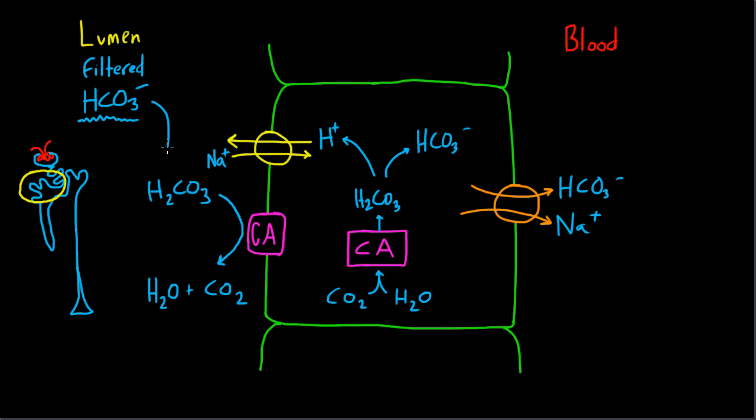So here's the process by which the kidney reclaims bicarbonate. Filtered bicarbonate comes down and actually meets free hydrogen ions. So this right here is a sodium hydrogen ion exchanger. It spits a hydrogen ion into the lumen in exchange for absorbing sodium. This hydrogen ion will combine with bicarb and form carbonic acid, which thanks to carbonic anhydrase, which is sitting right here in the lumen on the brush border of the proximal tubular cell, will create CO2 and water.